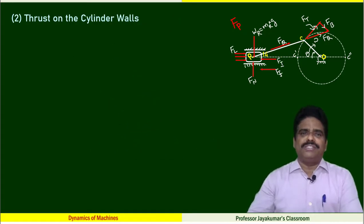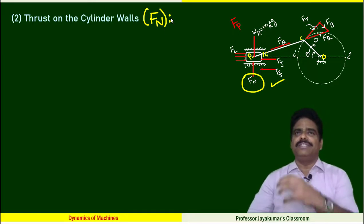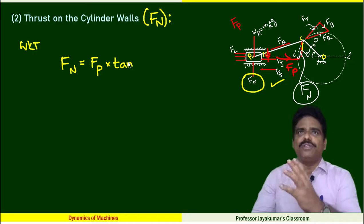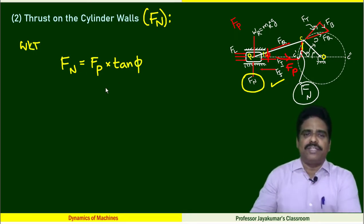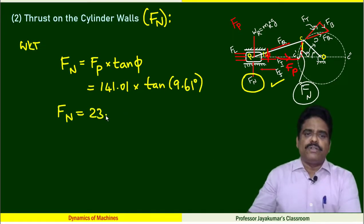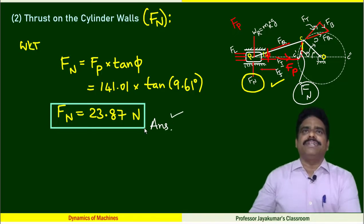Now we will move on to the second question, thrust on the side walls. This is what we are talking about, which is nothing but normal reaction exerted by the cylinder walls on the piston. We know that FN equals FP tan φ. 141.01 multiplied by tan 9.61 degrees, we are getting the answer as 23.81 Newton. This is my second answer.